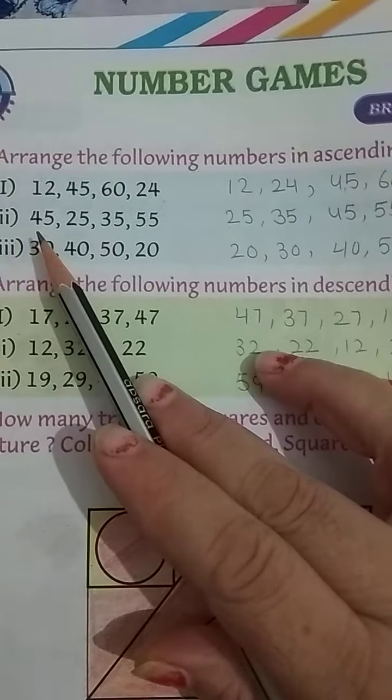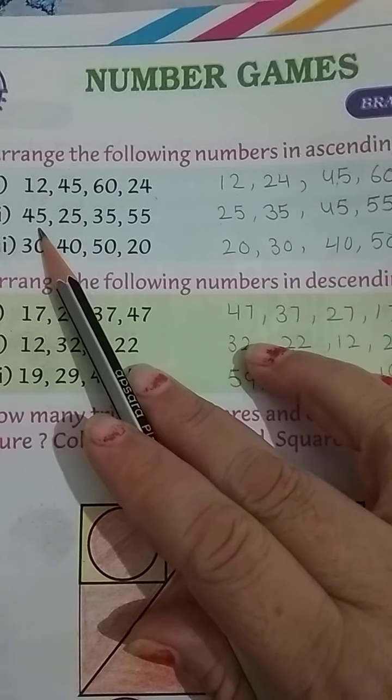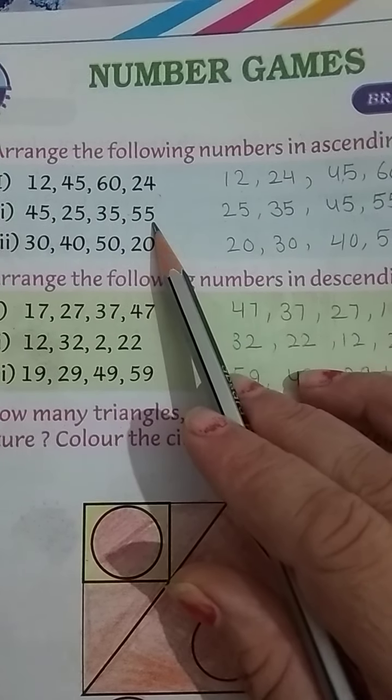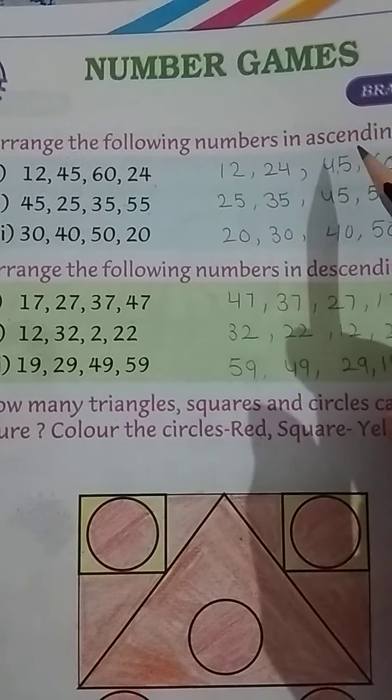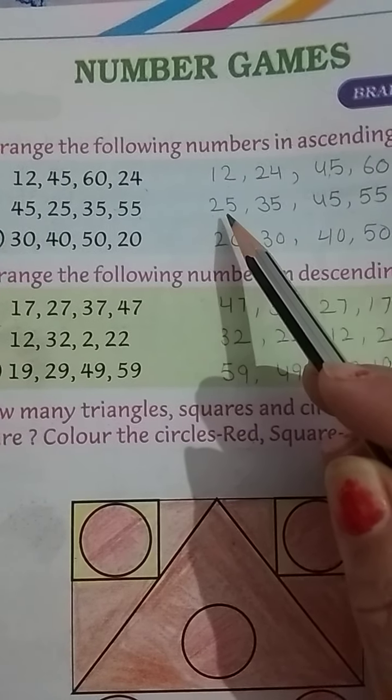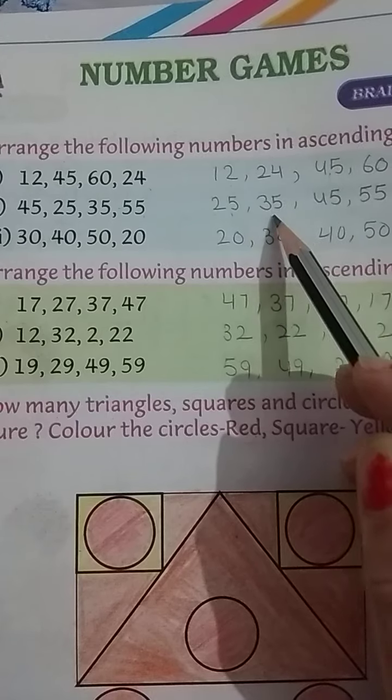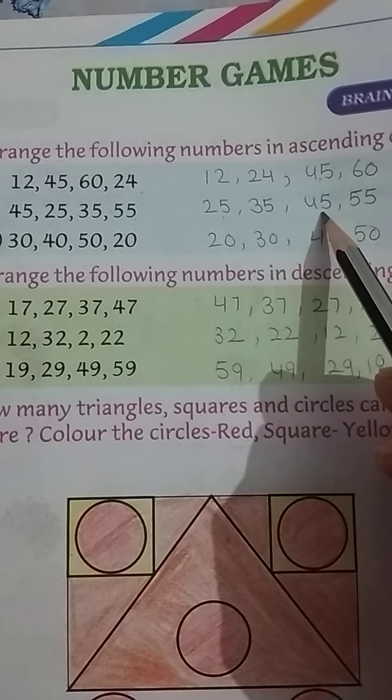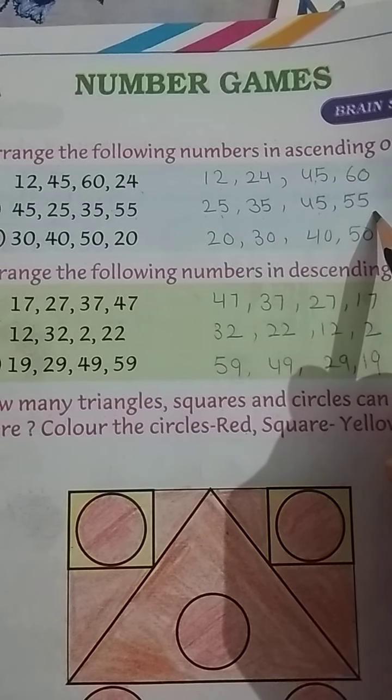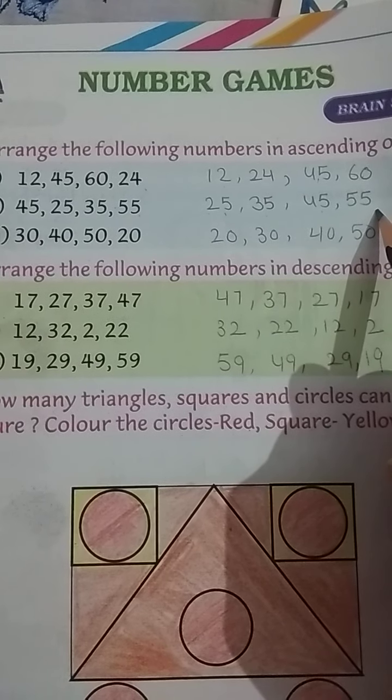Issi tarah se second 45, 25, 35 and 55. Yeh bhi ascending orders me nahi. Isko ascending order me kaise lekho ghe? First ayaga 25. Next 35, 45 and 55. Yeh biggest number 55 se.